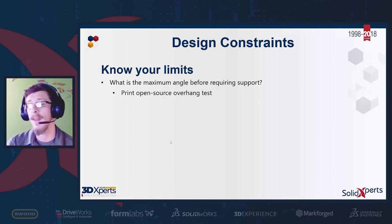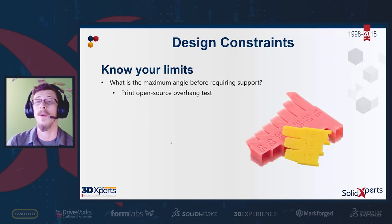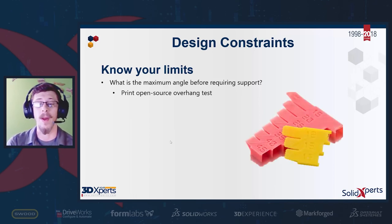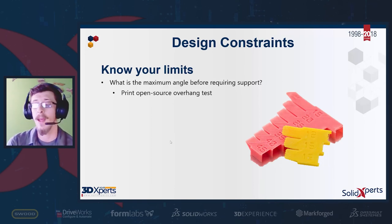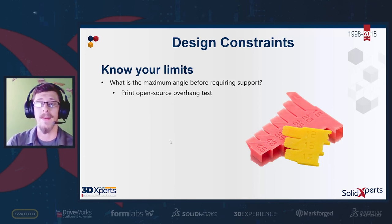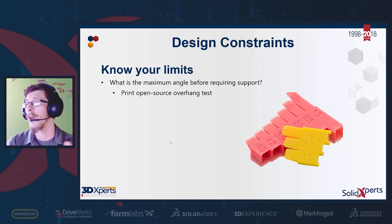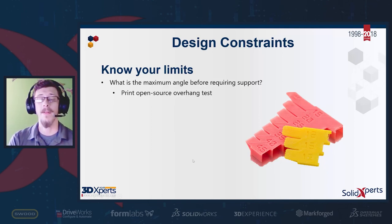There are plenty of overhang tests available on open-source 3D communities, or you could create your own with different angles anywhere between 5, 10, 15, all the way up to 90 degrees in increments of 5. There are many styles available online.